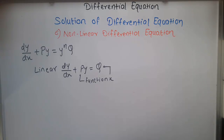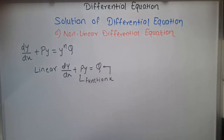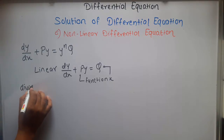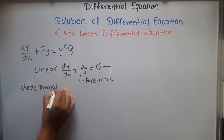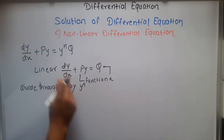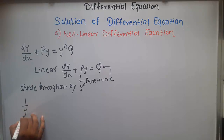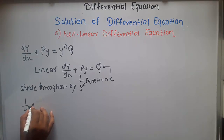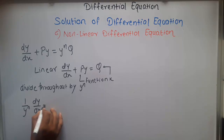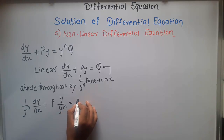By doing some manipulation we convert this non-linear differential equation into a linear differential equation. The first step is to divide throughout by y^n — that is, divide by the term associated with Q. Our equation then becomes (1/y^n)(dy/dx) + Py/y^n = Q.